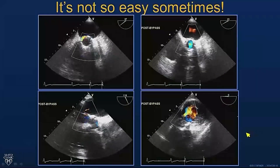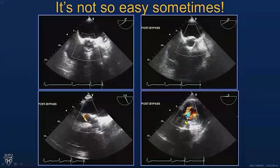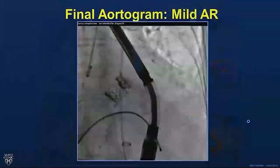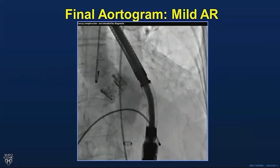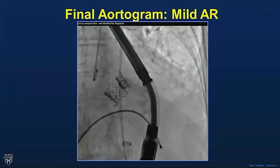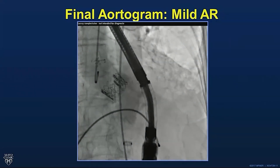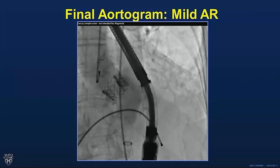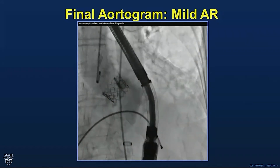Sometimes it's not so easy. Here's another case with periprosthetic leak visible here. This is a deep transgastric view, which can sometimes accentuate the jet — it fans out pretty well. That patient ended up having an aortogram; their creatinine was good, and there was only mild AR. The key thing is to assess right at the valve level in the short axis view, use multiple imaging modalities, and be aware that you can have reversal of flow in the descending thoracic aorta due to aortic stiffening without significant aortic regurgitation. If you don't have significant reversal in the descending aorta, chances are the AR is not that significant.